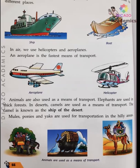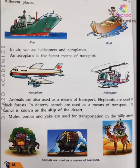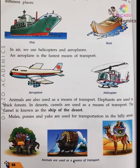If somebody asks you what is known as the ship of the desert, you have to tell them the camel is known as the ship of the desert. Mules, ponies, and yaks are used for transportation in hill areas. These animals are used as a means of transport in hilly areas.